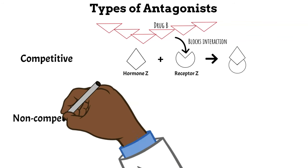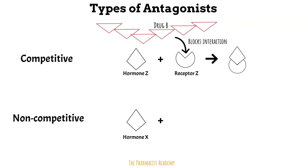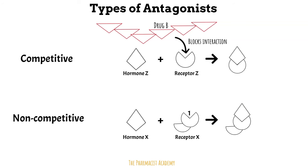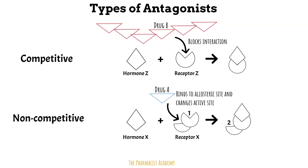For non-competitive antagonists, hormone X normally binds to receptor X to form a complex and a response. In this case, the receptor has two sites: the active site that hormone X binds to, and an inactive site called the allosteric binding site. For non-competitive antagonism, the drug binds to the allosteric site, which causes the shape of the active binding site to change. This prevents hormone X from being able to bind to the active site because they no longer match.